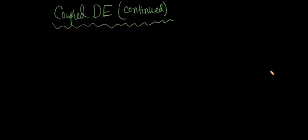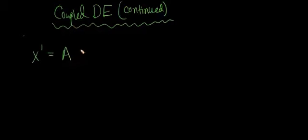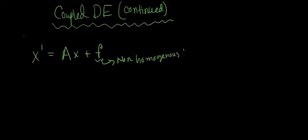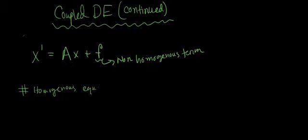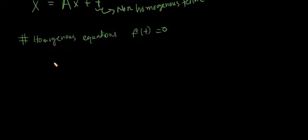Hello everyone and welcome to another lecture. In the past lecture we saw how we can develop a formal procedure to solve a coupled differential equation or a system of differential equations. Today we are going to work that out. Our coupled differential equation had the general form where f was the non-homogeneous term, and we will only consider the homogeneous equations, meaning f of t will be zero, so our equation will be x prime equals Ax.